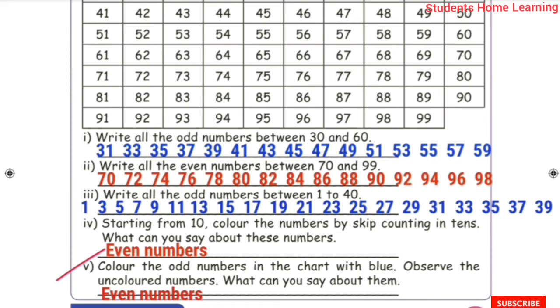Color the odd numbers in the chart with blue. Observe the uncolored numbers — what can you say about them? The uncolored numbers in the chart are all even numbers.